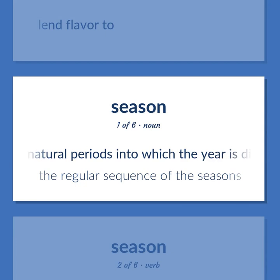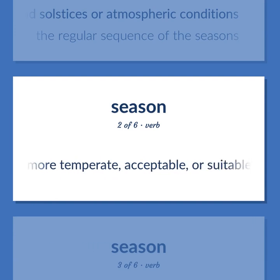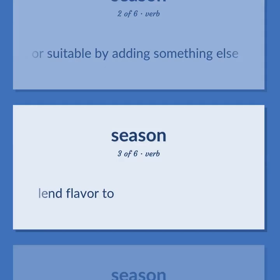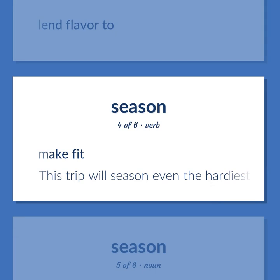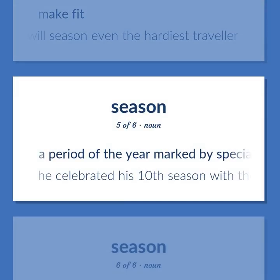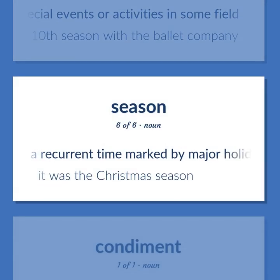Season: One of the natural periods into which the year is divided by the equinoxes and solstices, or atmospheric conditions — 'The regular sequence of the seasons.' Make more temperate, acceptable, or suitable by adding something else. Lend flavor to. Make fit — 'This trip will season even the hardiest traveler.' A period of the year marked by special events or activities — 'He celebrated his tenth season with the ballet company.' A recurrent time marked by major holidays — 'It was the Christmas season.'